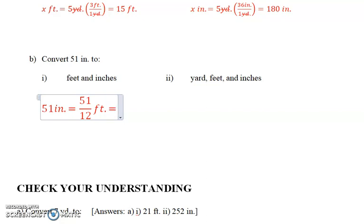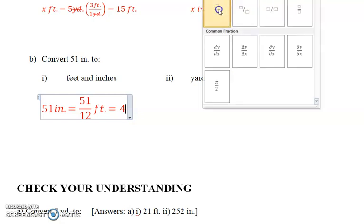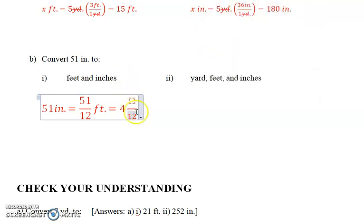So we know that this is going to be transferred into 4, and the denominator is 12. So you guys recall moving to a mixed number, 12 times 4 is 48, 48 subtracted from 51 is 3.